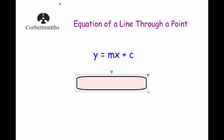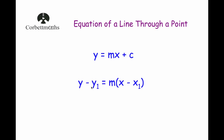Another way to do it is to use the formula y minus y1 equals m bracket x minus x1, where m is the gradient and x1 and y1 are the coordinates that you've been given. If you substitute those values in and rearrange into the format y equals mx plus c, you'll also find the equation of the line through a point. We're going to use this formula today to answer some questions.